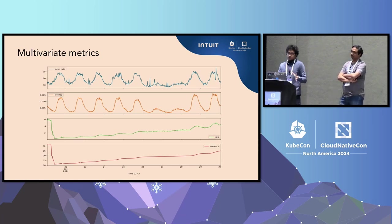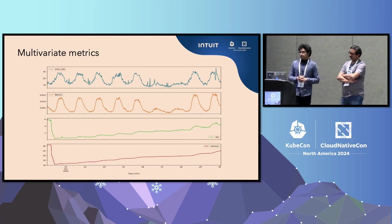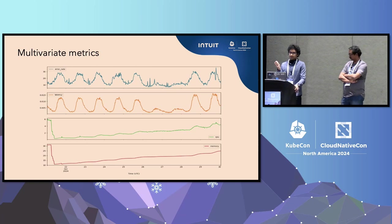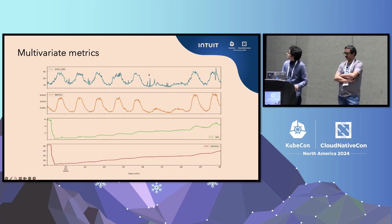You can see how a typical service's golden signal metrics look. You can see how different each metric is. For example, error rate and latency follow proper seasonality — daily as well as weekly. But error rate has a large amount of variance in the data with a lot of spikes. This is an example of a contextual anomaly that a global anomaly detector would not be able to catch.